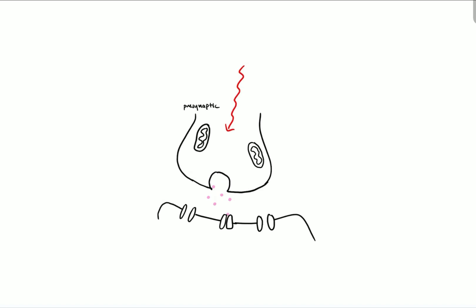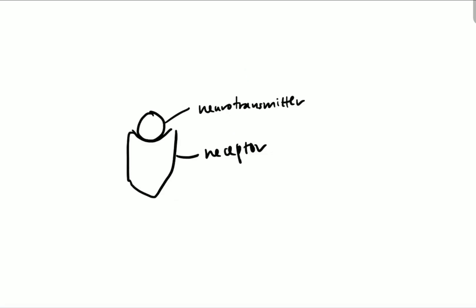This doesn't require energy—it's just simple diffusion. A neurotransmitter has a specific shape that matches with its receptor. It will bind to the receptor that has a complementary shape.